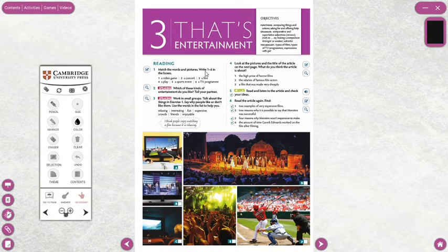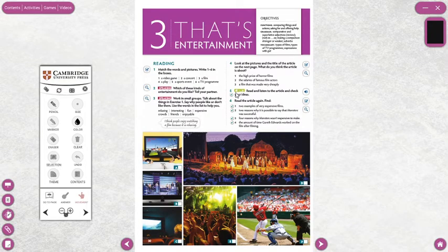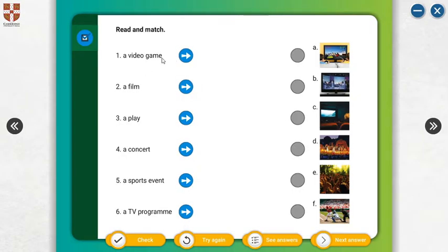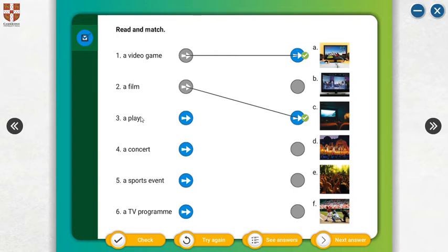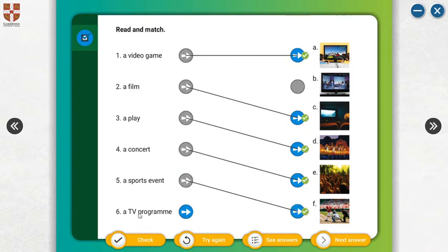Look at here: match the words and pictures. You can read and match the picture. For example, which one is a video game? Which one is a film? C is a play, D is a concert, E is a sports event, F is a TV program.